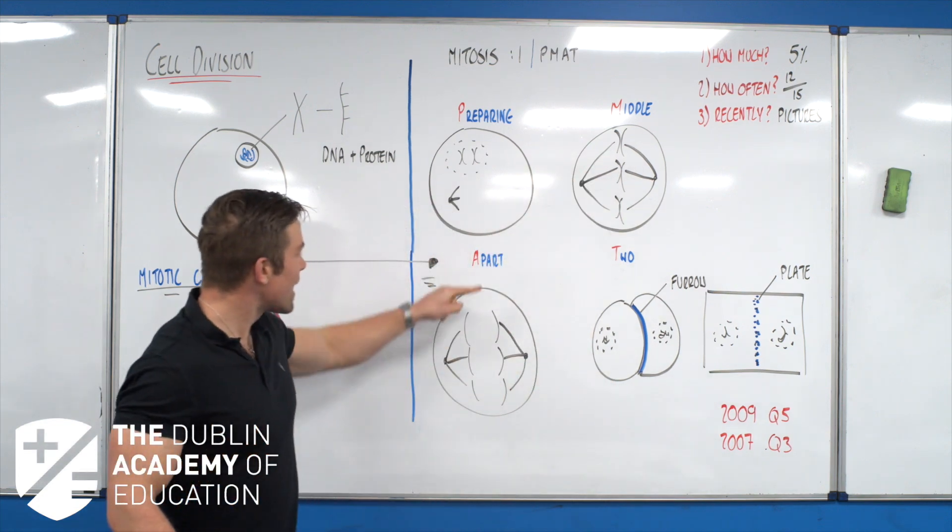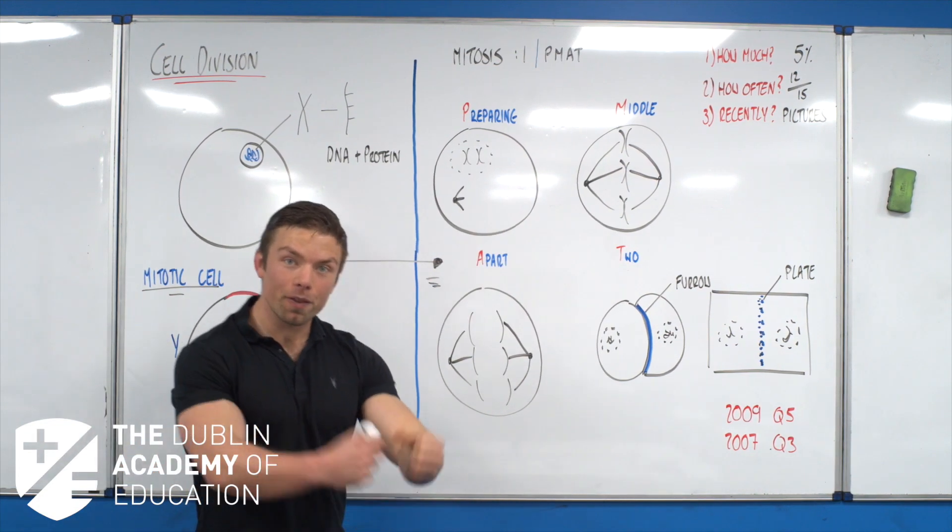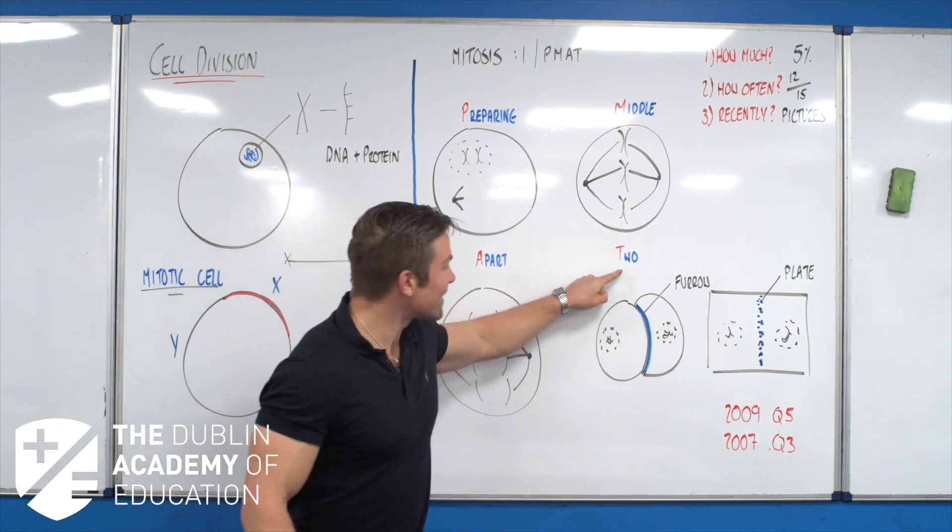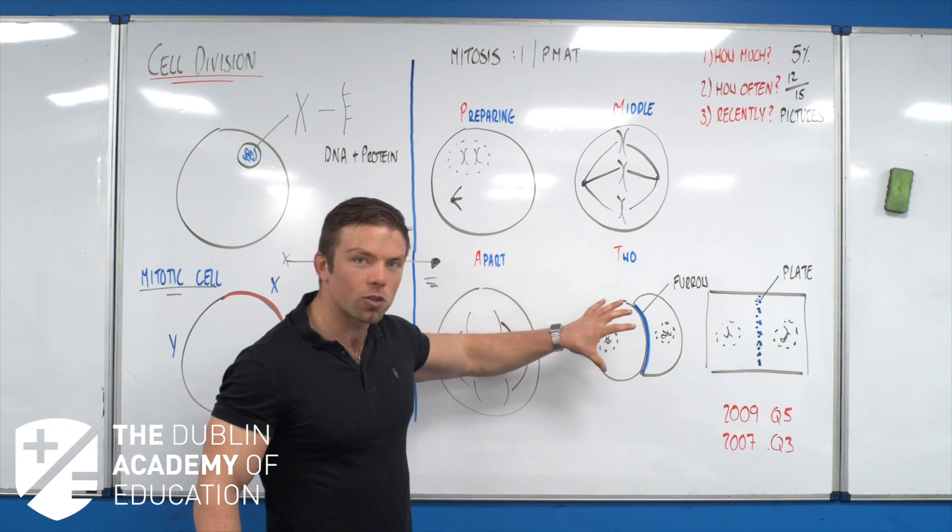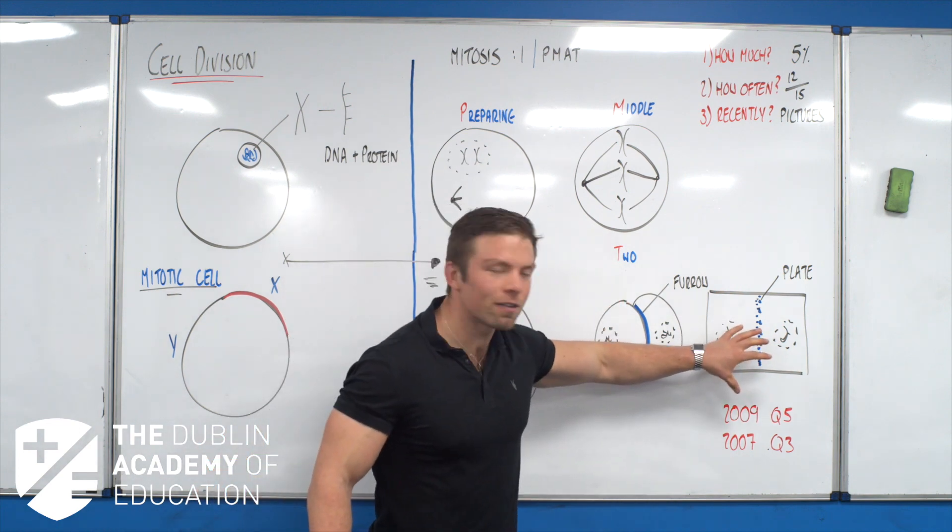A for anaphase, A for when the chromosomes pull apart, and T for telophase where it splits in two. We're talking about a furrow in terms of an animal, we're talking about a cell plate in terms of a plant.